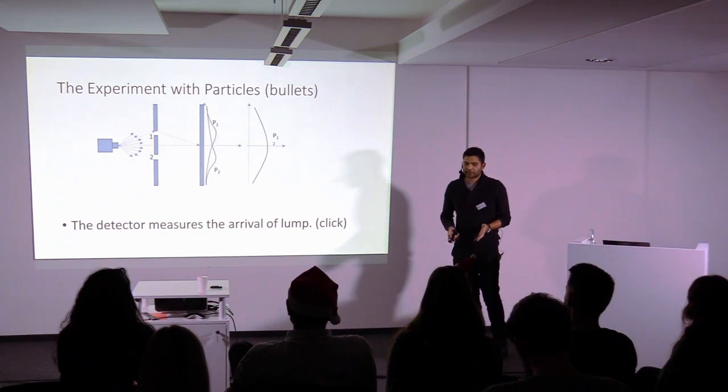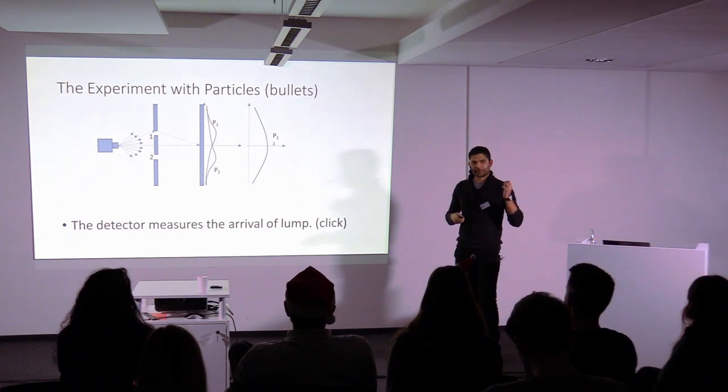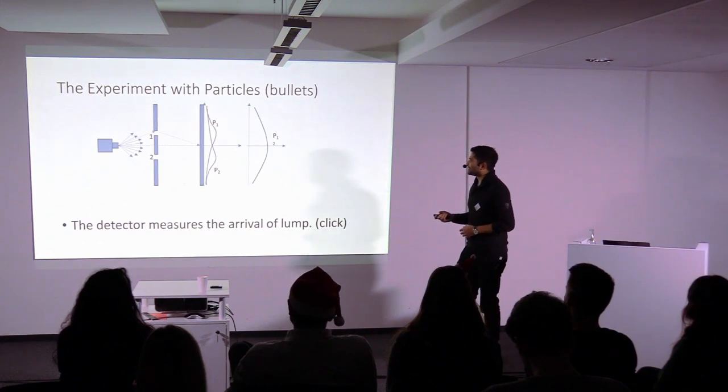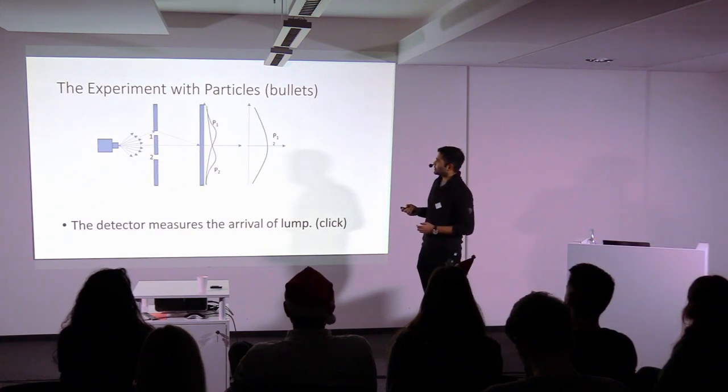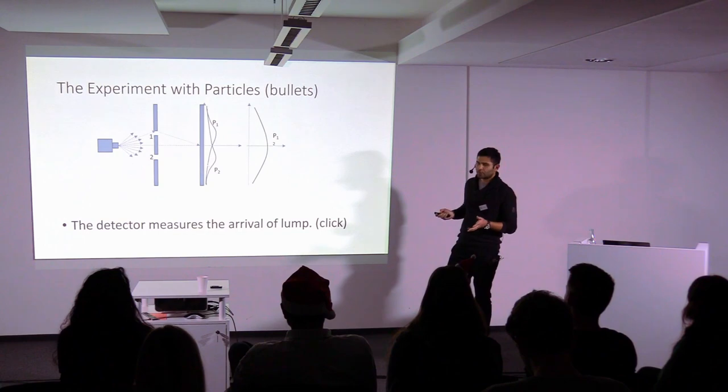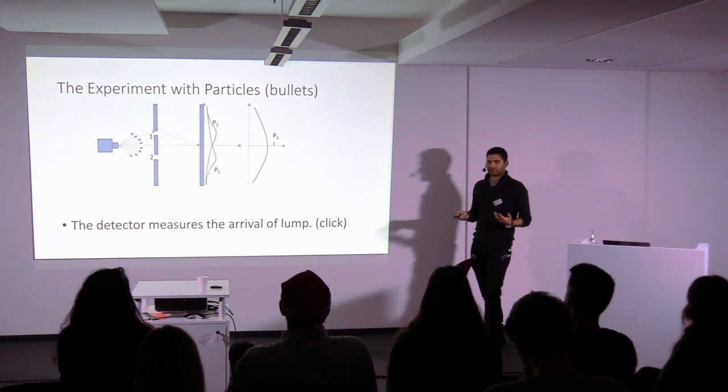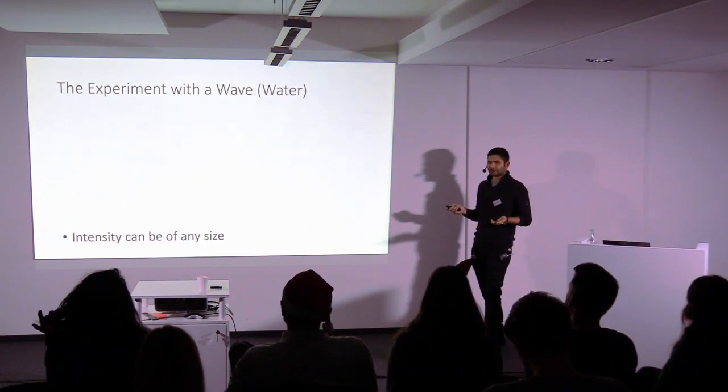Similar is the case with hole two. And once we have both holes open, you get P1 plus P2. Now math says that if there's an event one where the particle goes from hole one, and this is the distribution P1 of that, another event hole two, the distribution P2 is the resulting thing. When both holes are open, you have P1 plus P2. And that's exactly what has happened.